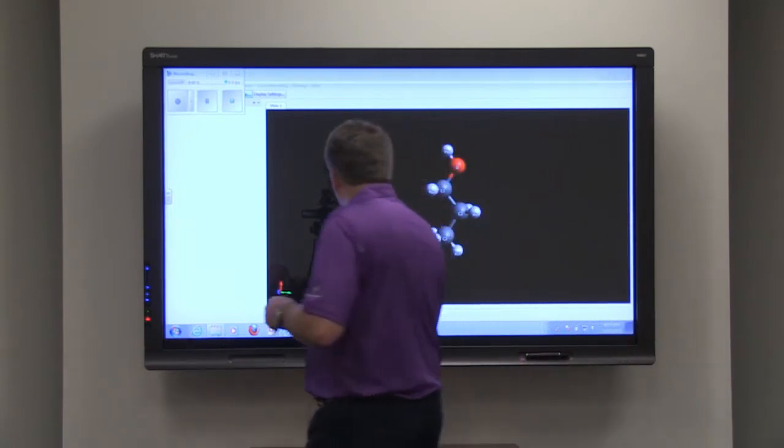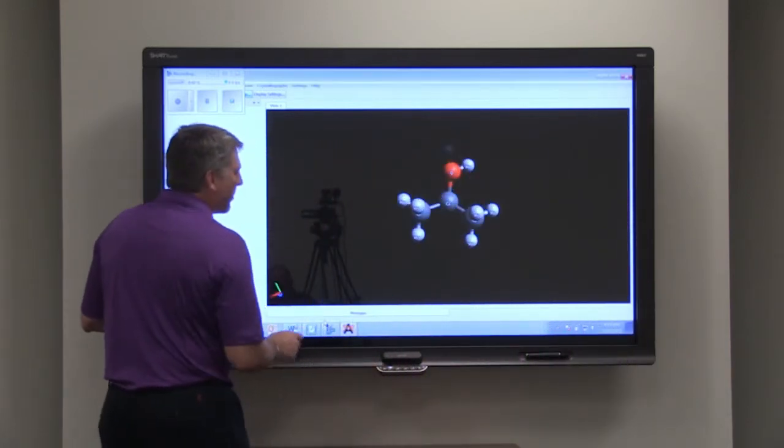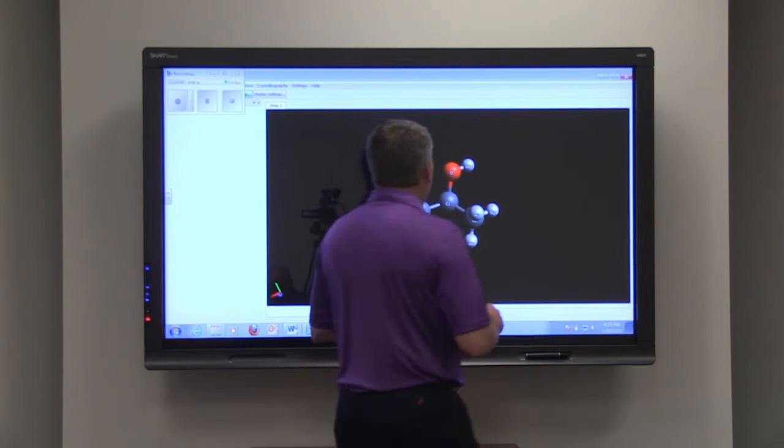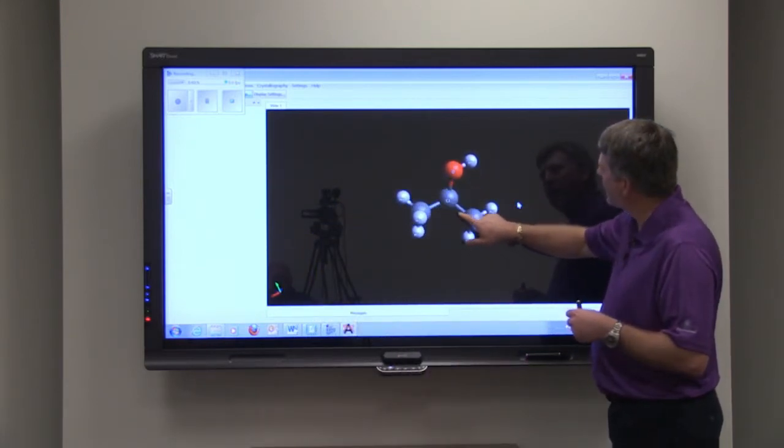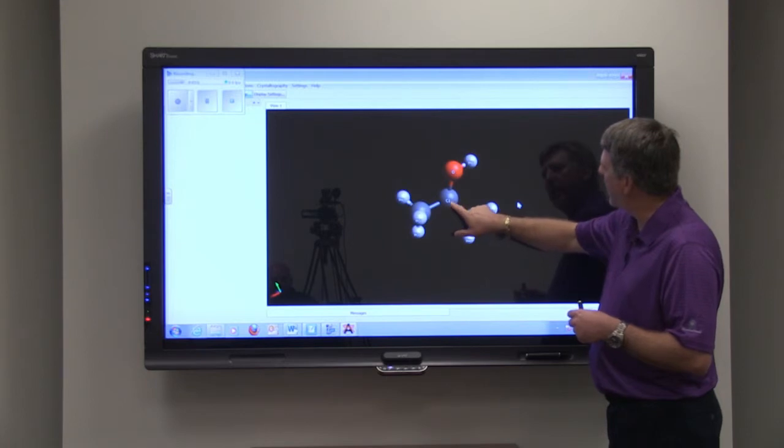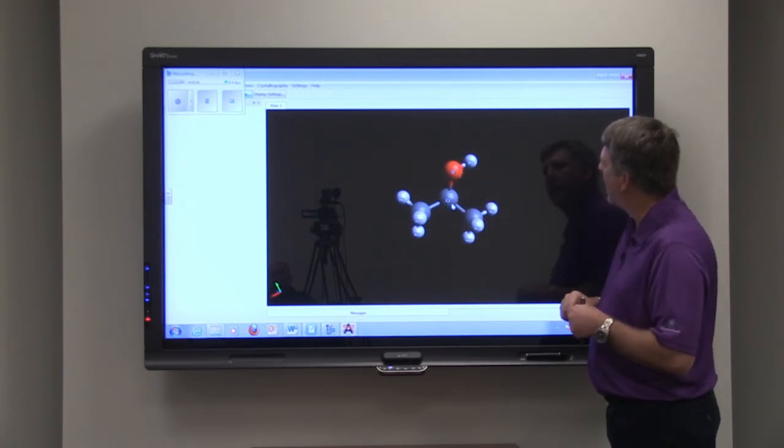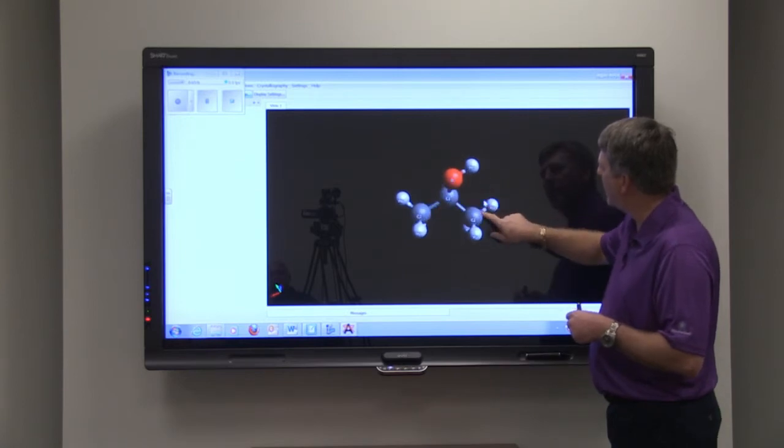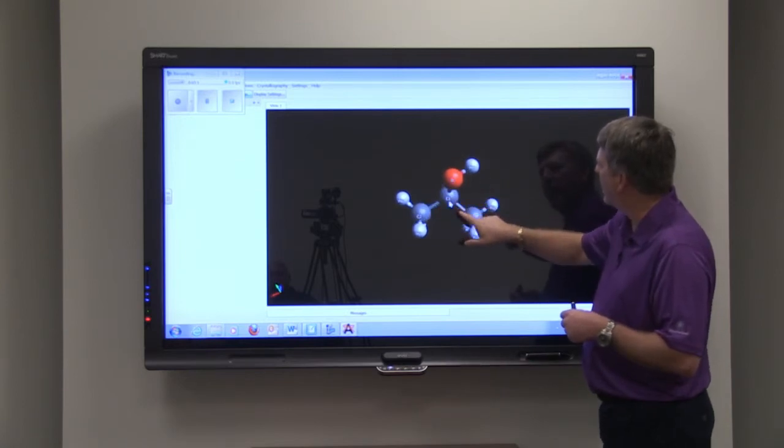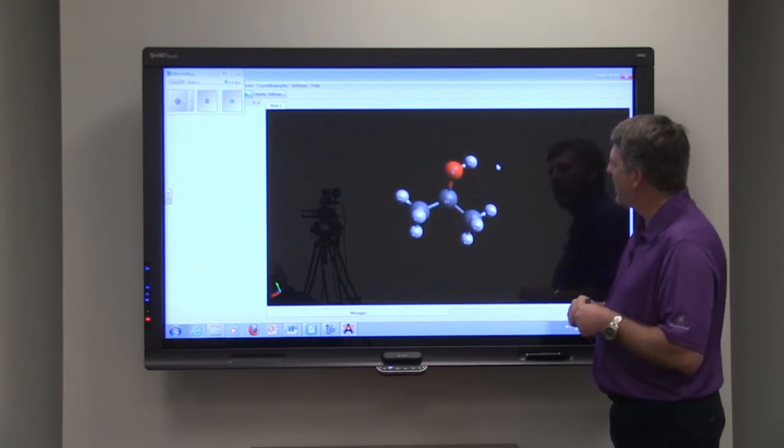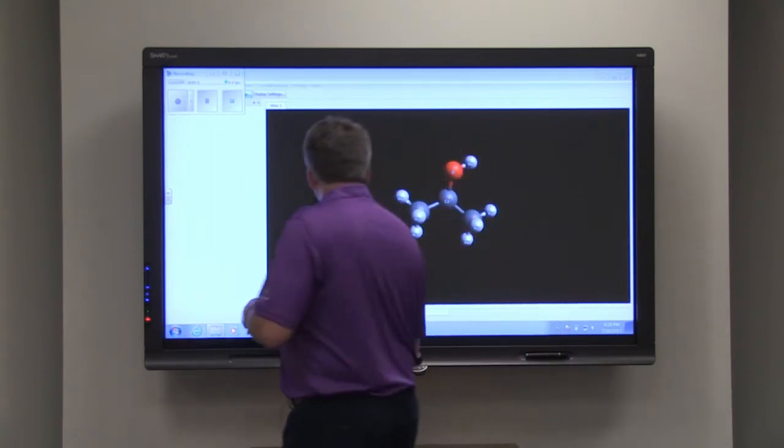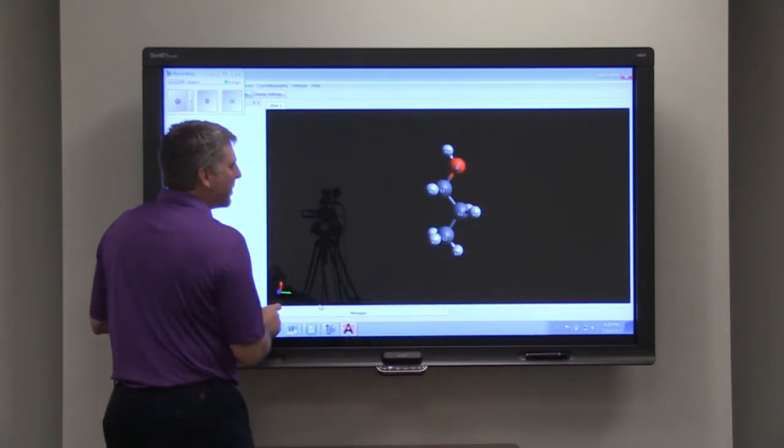But let's look at an isomer of propanol, and that would be isopropanol. And with isopropanol, you can see that the middle carbon is the one that has the hydroxyl group attached to it. So here's carbon, carbon, carbon, and then the hydroxyl group attached to the middle. So propanol and isopropanol are isomers of one another.